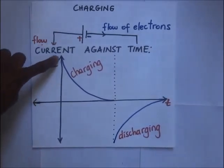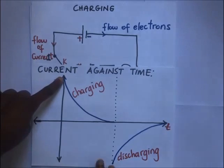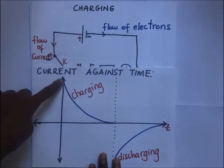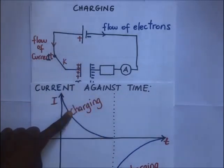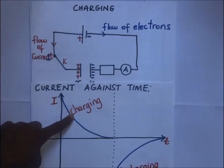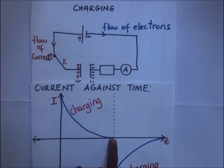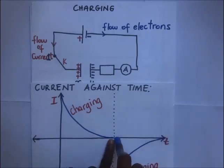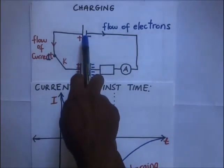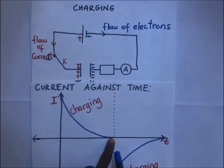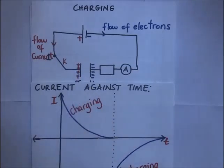Initially the current is very high, but as the charging process continues the current decays as the potential difference across the capacitor plates increases. The current decreases to zero, meaning the potential difference across the plates equals the EMF of the cell. At that point the charging of the capacitor is complete and no current flows.